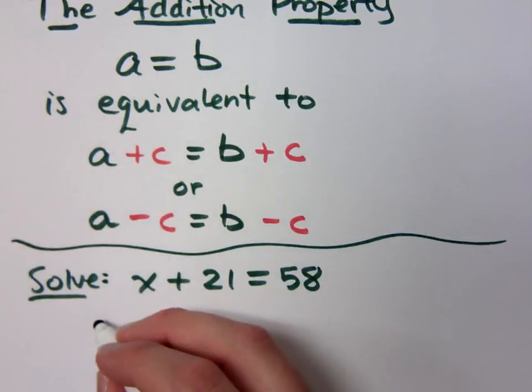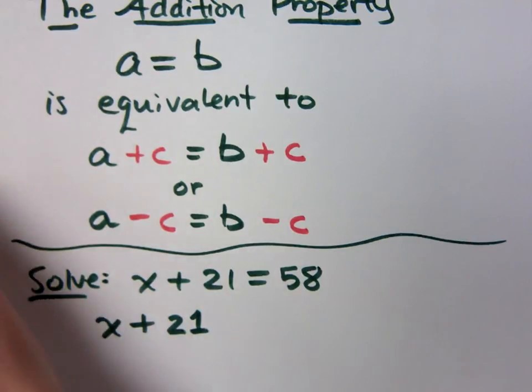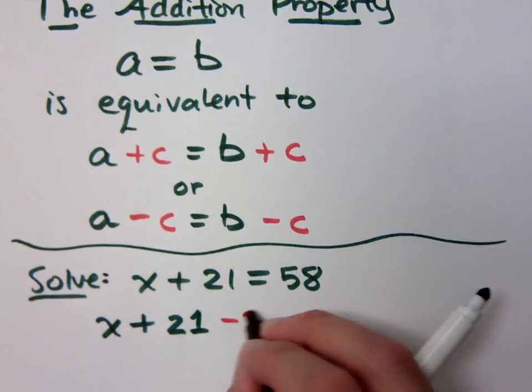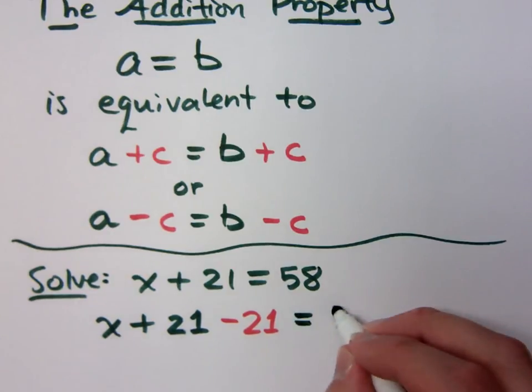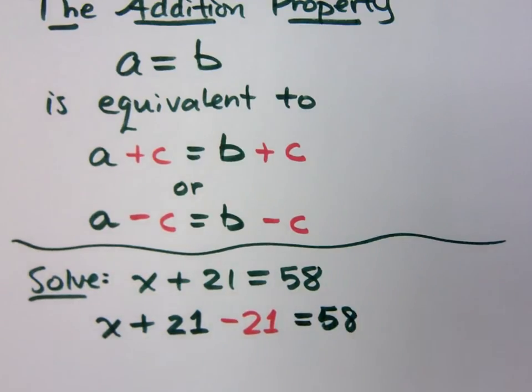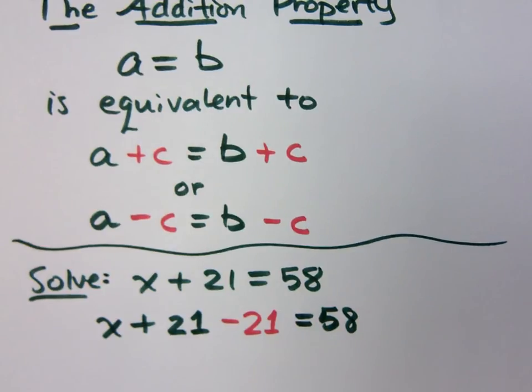So, one of the ways we have of doing this, by applying the addition property, is that we actually subtract 21 on both sides, like this. See, if I just write my equation like this, this is wrong. Why is this wrong? Because x will be by itself, but look what I did. I changed one side of the equation. But did I change the other side accordingly? No.